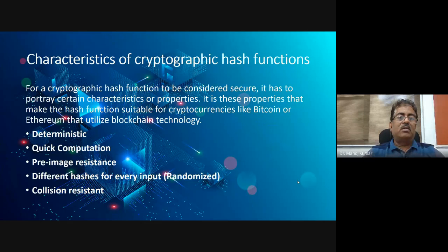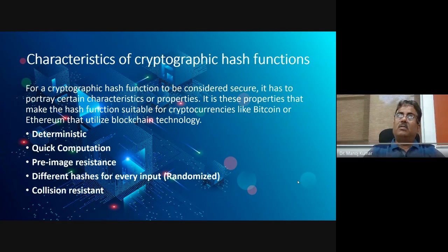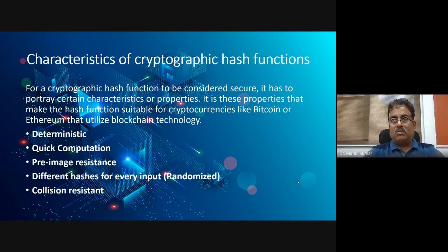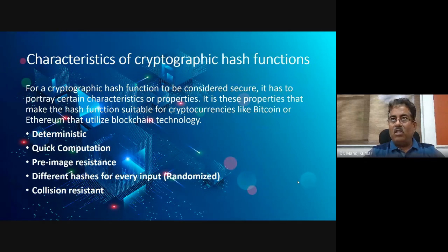Third is pre-image resistance. Like the hostel example: from a room number alone you should not be able to find out the student's data. From a given hash value, you cannot reverse-compute the input text. This is a one-way process — input text converts to a hash value, but from the hash value you cannot reconstruct the input. That property is essential for security.